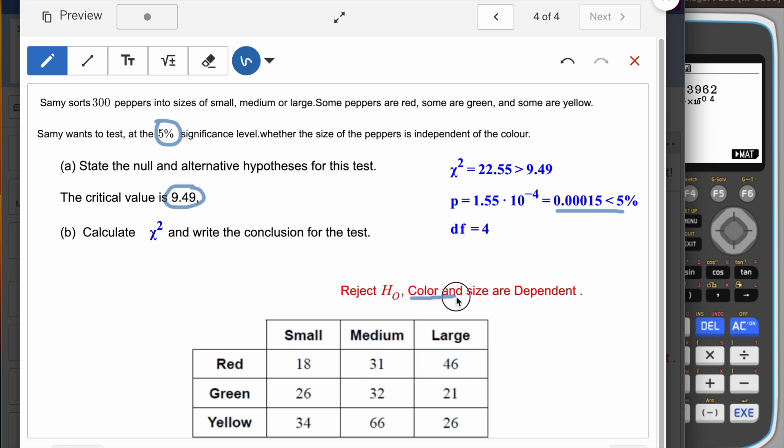So technically you can reject your null hypothesis, which means you have to say that color and size are dependent, they are not independent. Repeat this process. I hope this video will help you to solve other questions which are similar to this. Thank you.